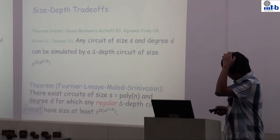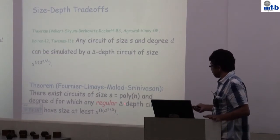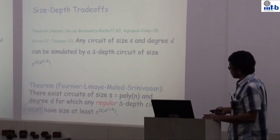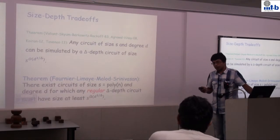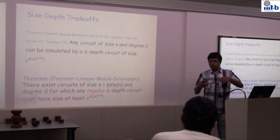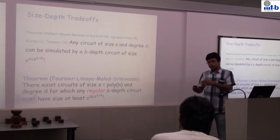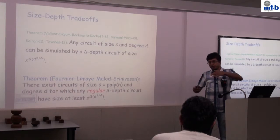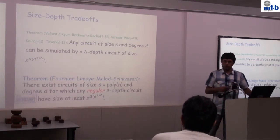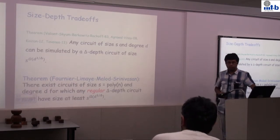Recently, with some additional restriction on the kind of circuits allowed — called regular circuits, where all nodes at any particular layer have the same degree — we know that this upper bound is almost optimal. With this restriction, we can show it is optimal, but in general we don't know.